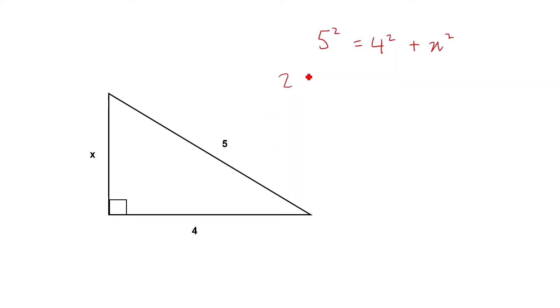Now we need to rearrange these in the form of x to find out what x is equal to. So we end up getting 25 minus 16 equals x squared.